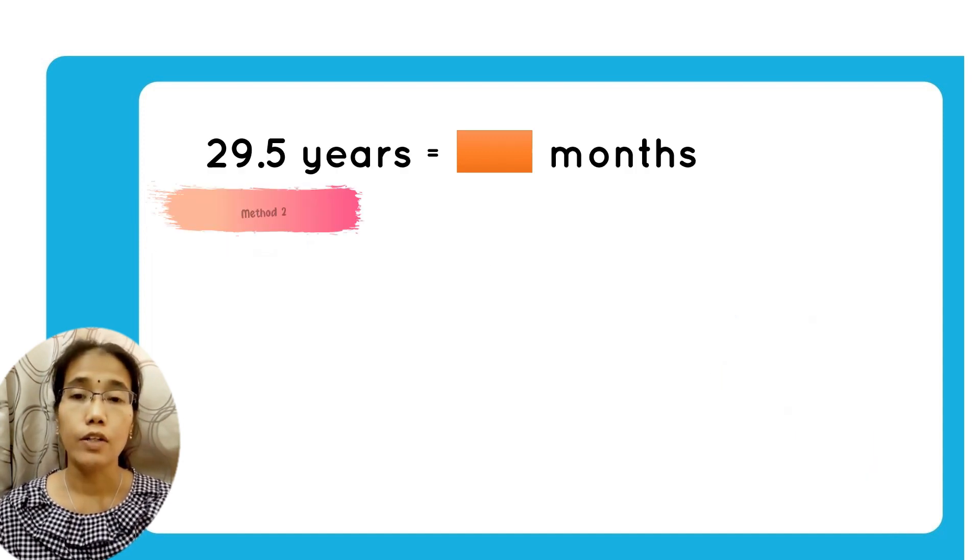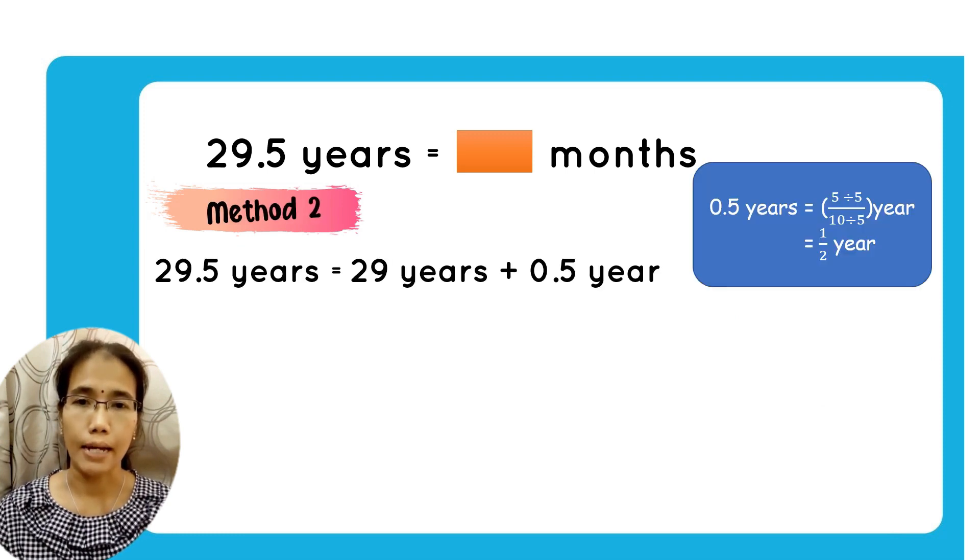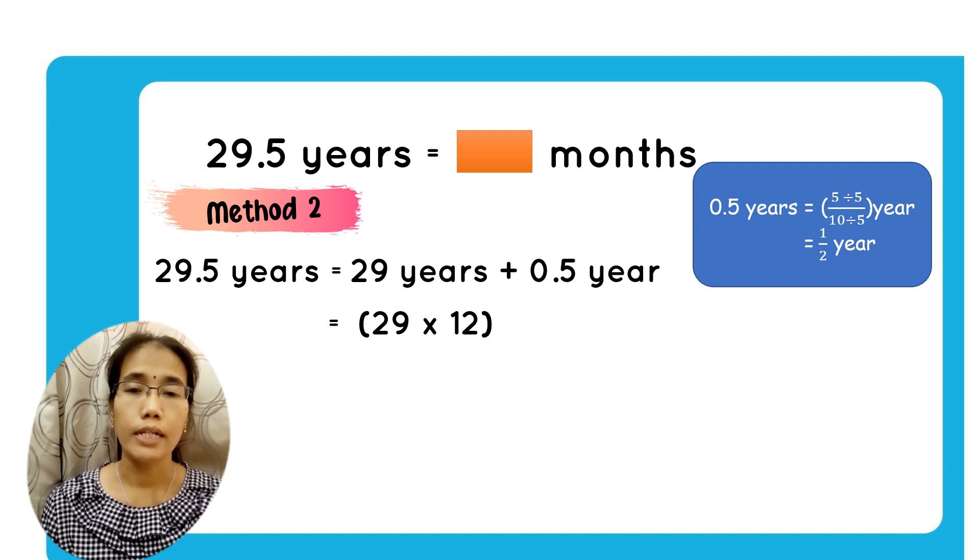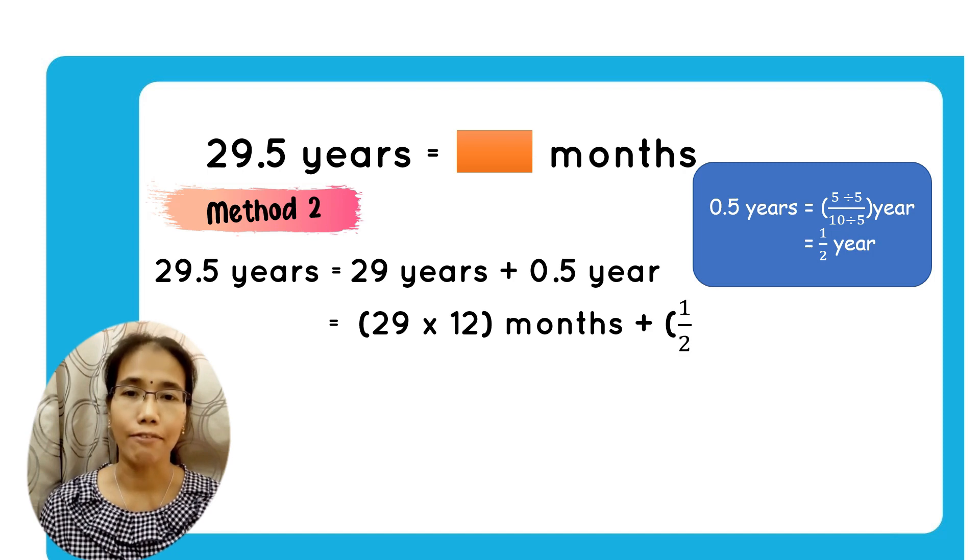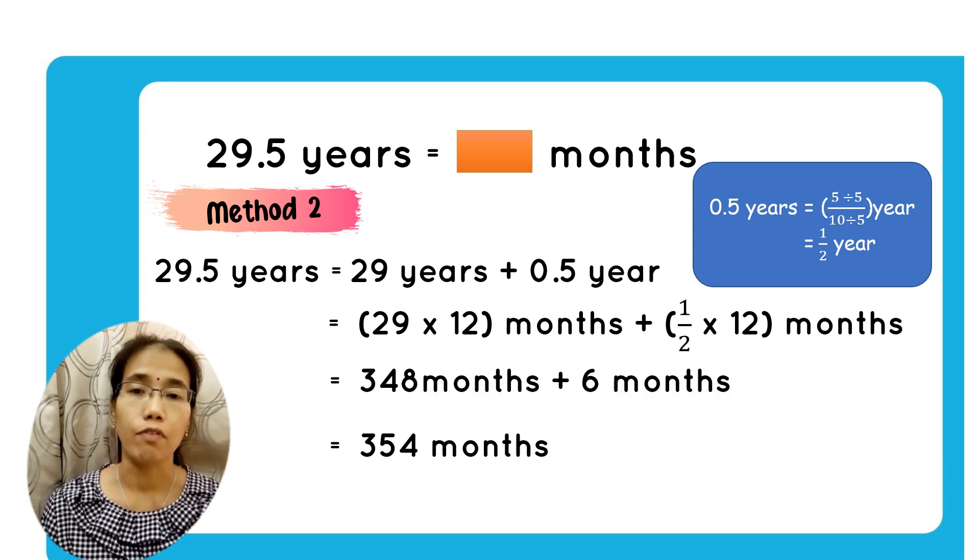You can also do this by splitting them. Split 29.5 years, separate them to 29 years plus with 0.5 years. 29 years, you convert to months, you multiply with 12. You will get 348 and 0.5 years is equals to half a year. So, half a year will be 6 months. So, 348 months plus with 6 months, you will get 354 months.